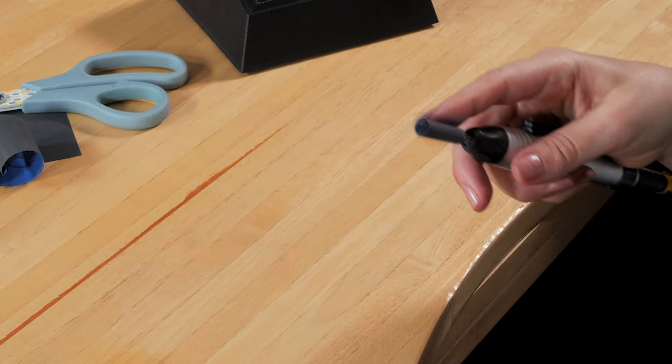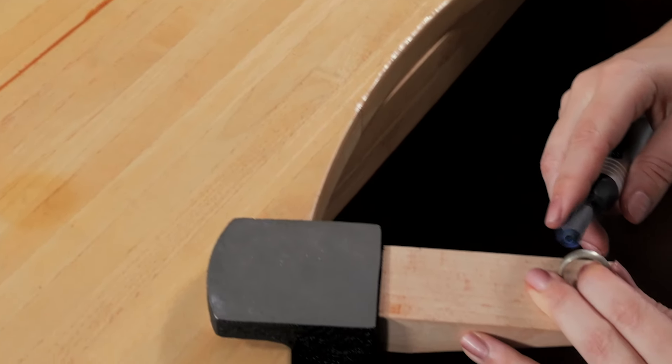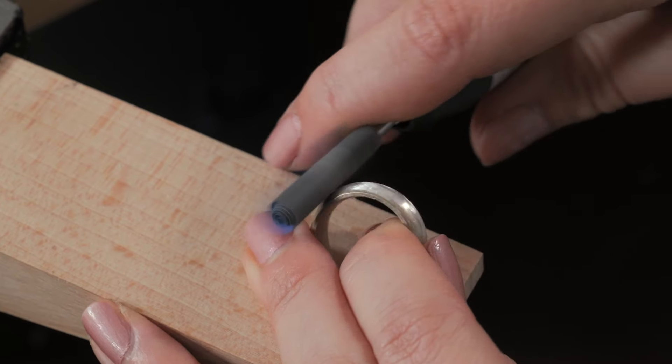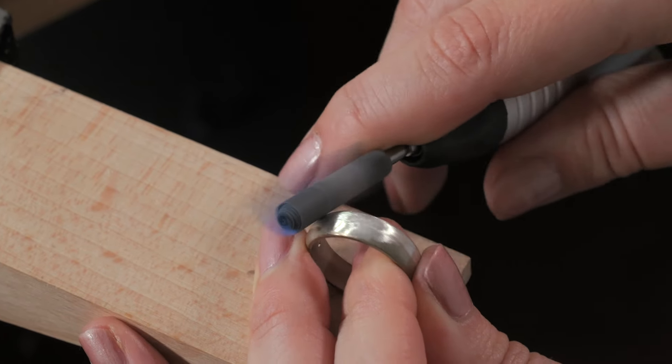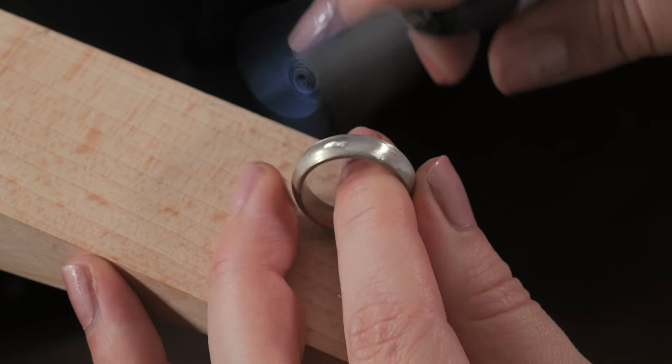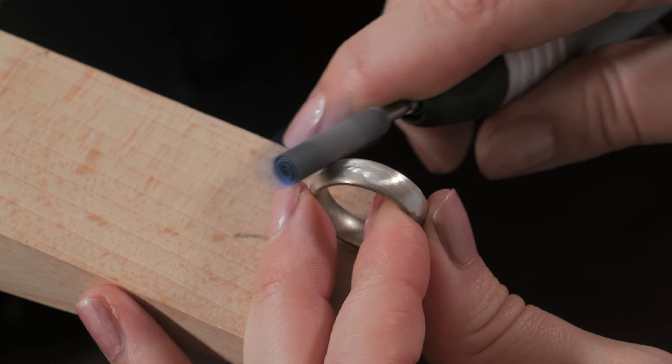So I usually come to my bench peg just so I can support my piece better and just rub it over. And this is a very old ring that needs some love, so I'm just giving it a little sand and I can give it a little polish afterwards.